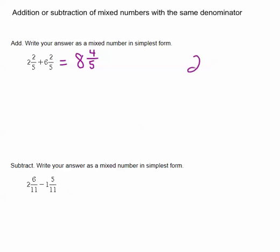Off to the side I want to show you another way to approach this problem. In the past you may have seen your mixed numbers written on top of one another, so that you have your whole numbers lined up, the 2 and the 6, and then you have your fractions lined up, the 2 fifths and the 2 fifths.